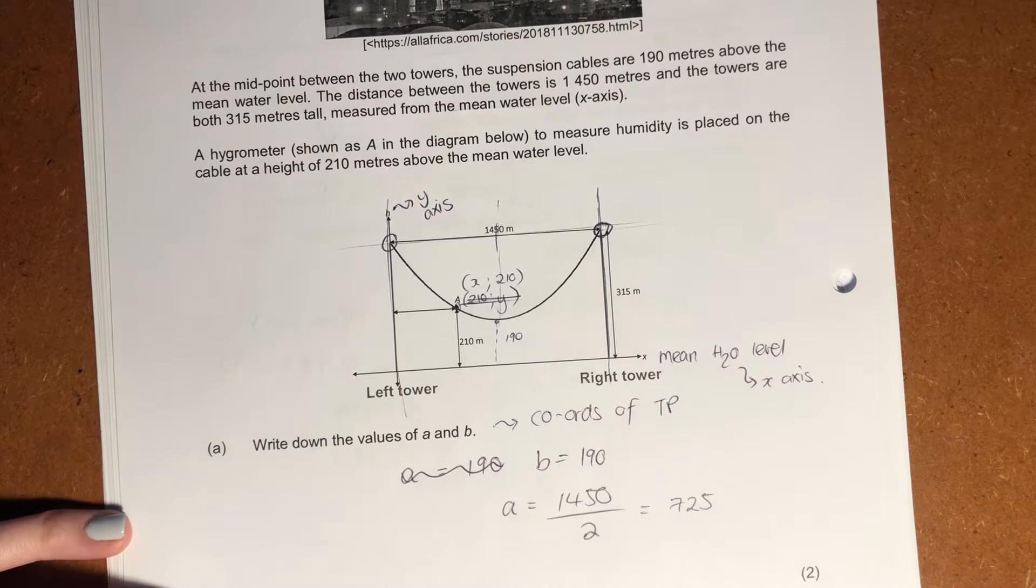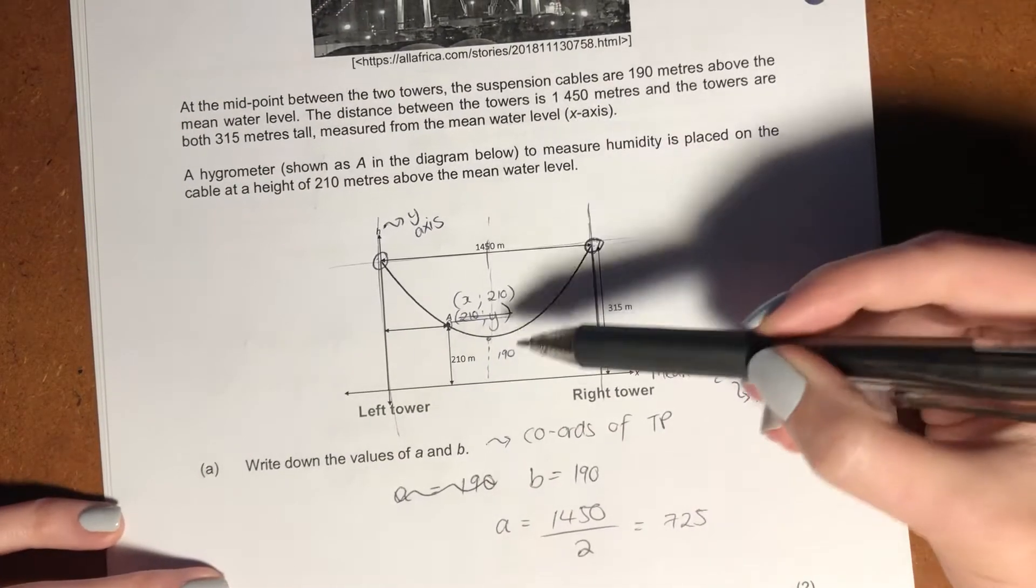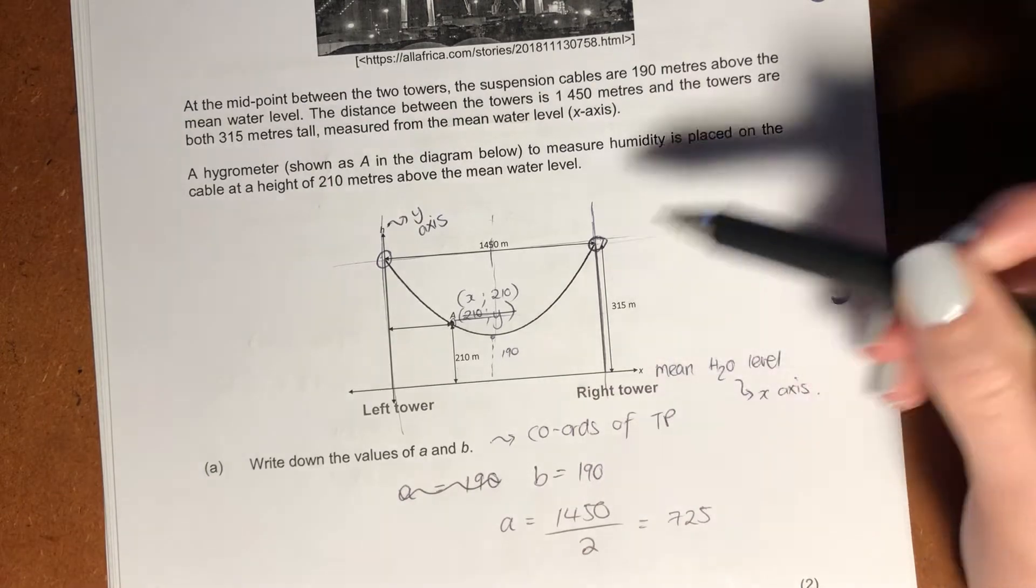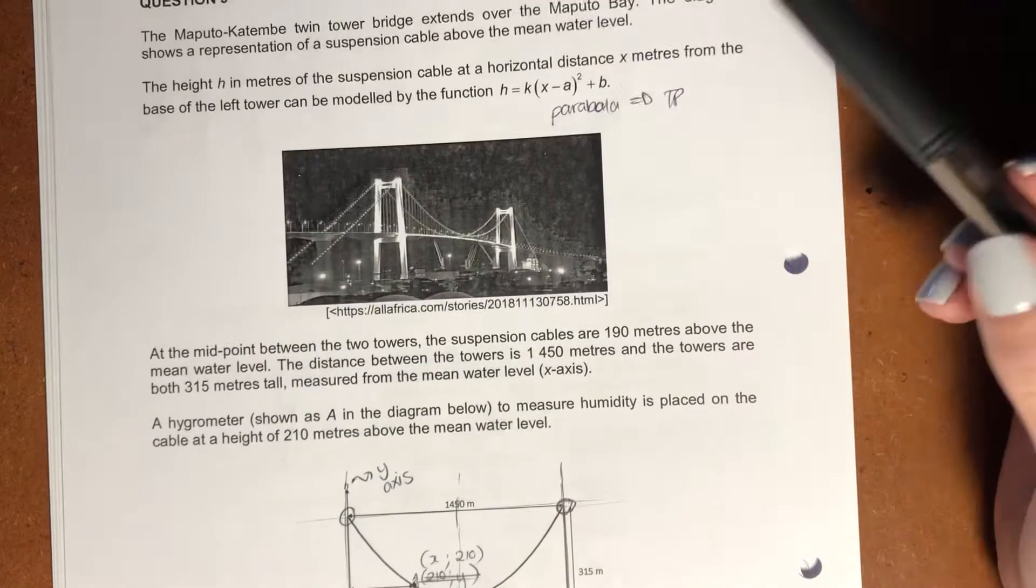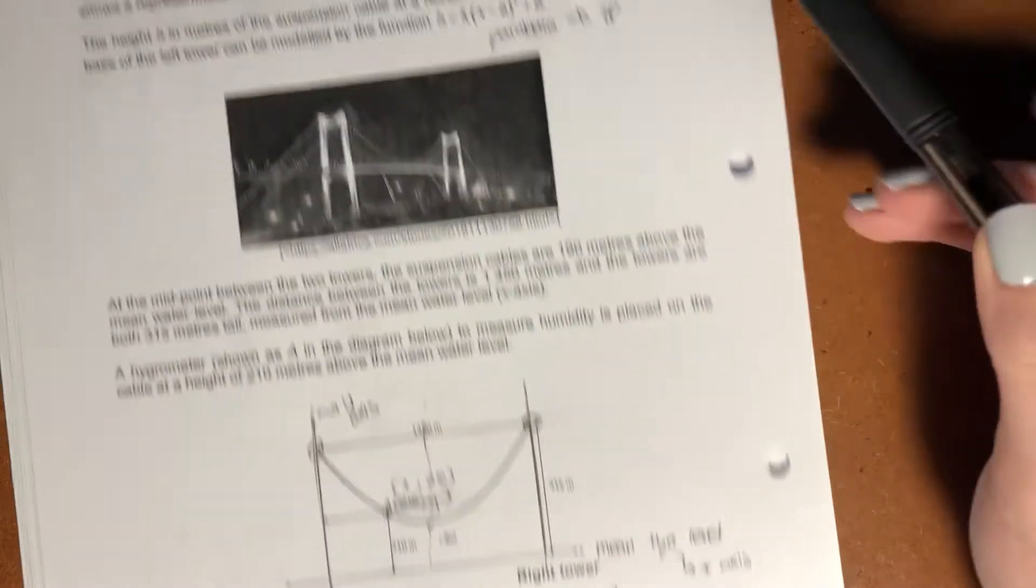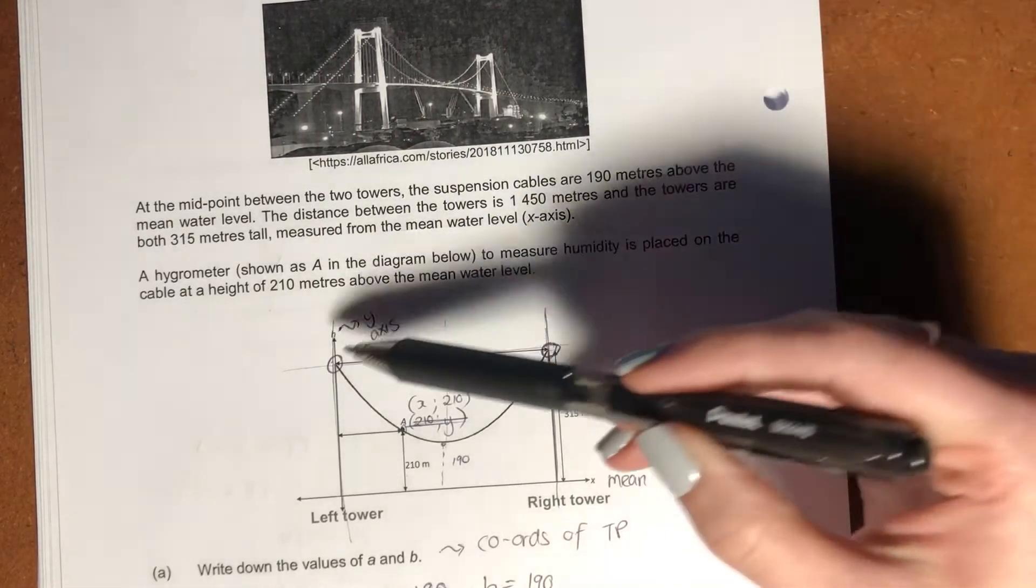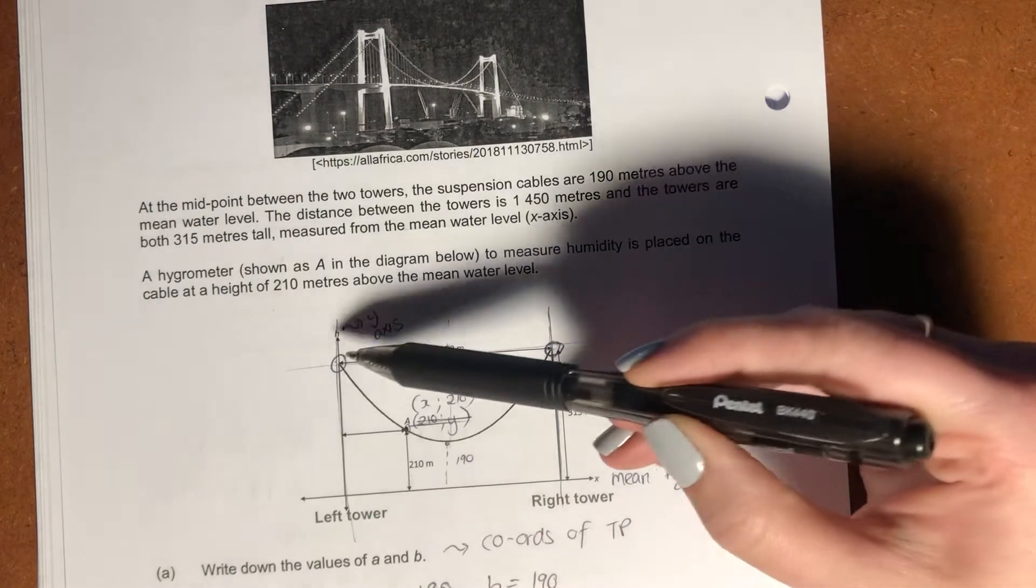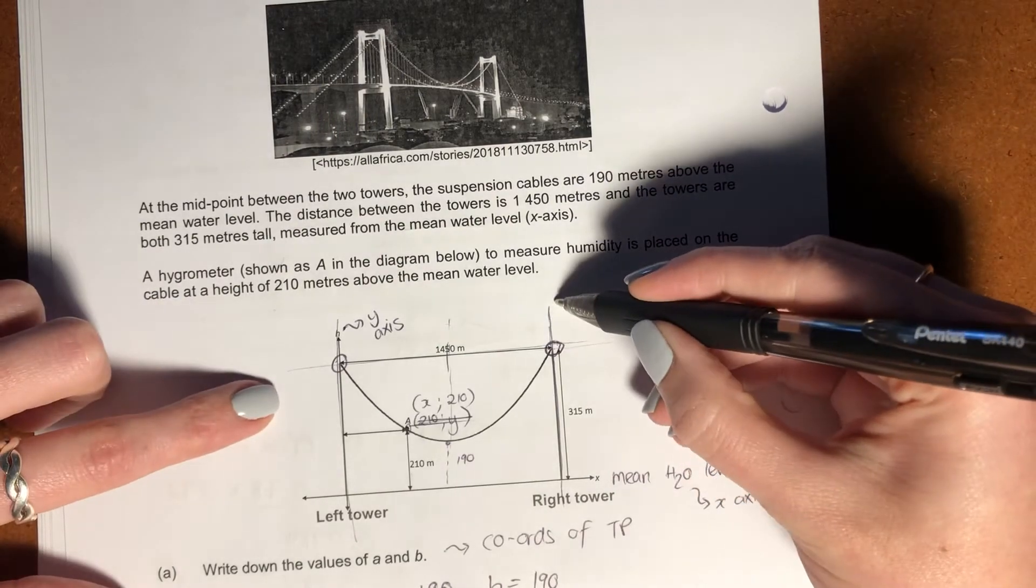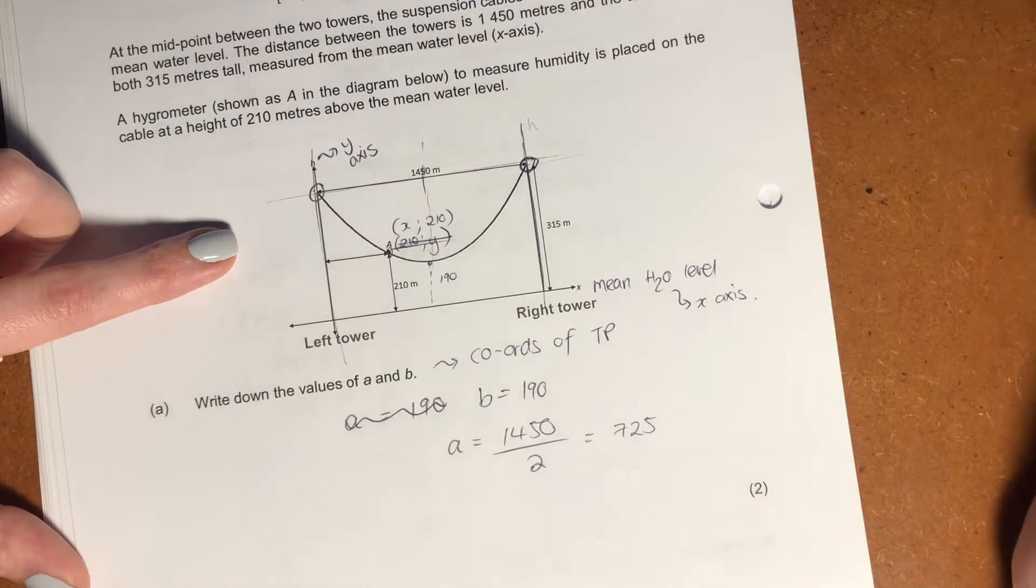So then it says, write down the values of A and B. What that means is it's saying just what are the coordinates of the turning point? Well, we know that the turning point is going to be 190 meters above the mean water level, so that's going to be our B value because that is our y value of our turning point. Our x value of our turning point, which is this A in the squared bracket, is going to be halfway between the two towers because we know that's a definition of a turning point. It's always halfway, right, between, in this case, it would be our two y intercepts. So you're going to say 1450 divided by 2 is 725. So now you've found that.